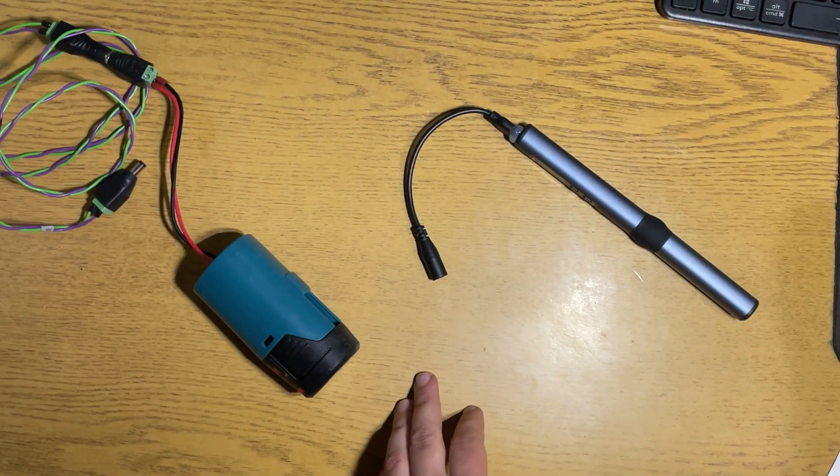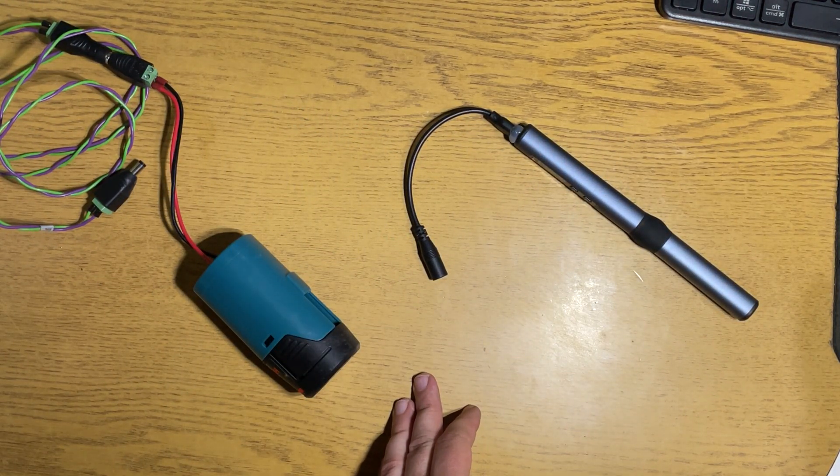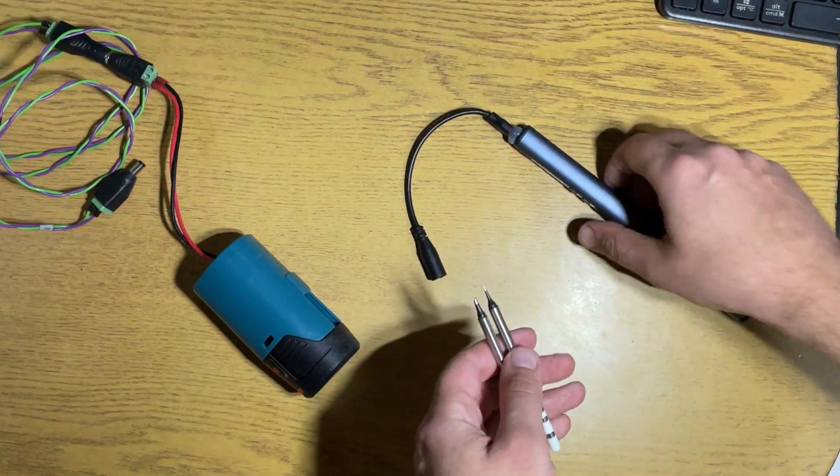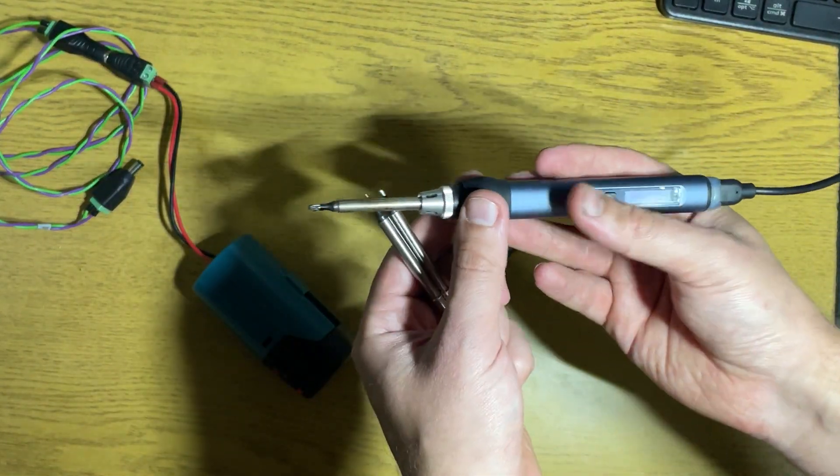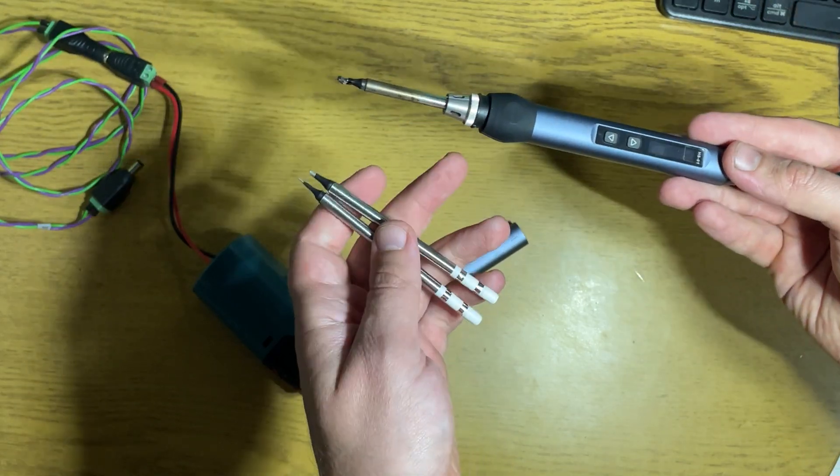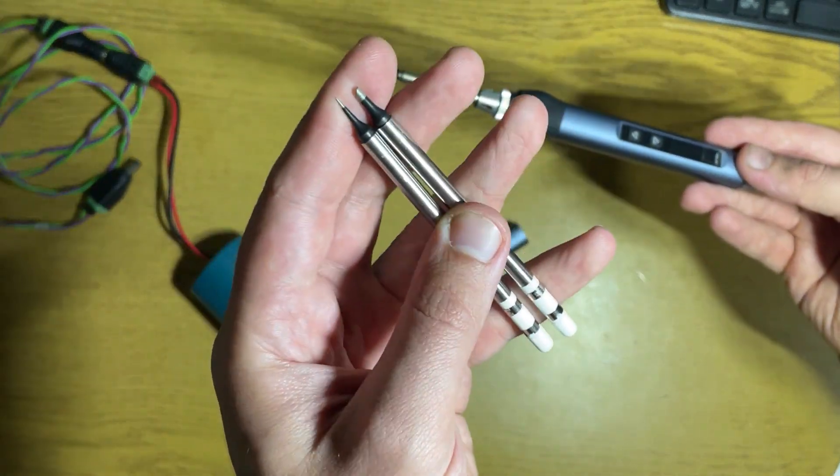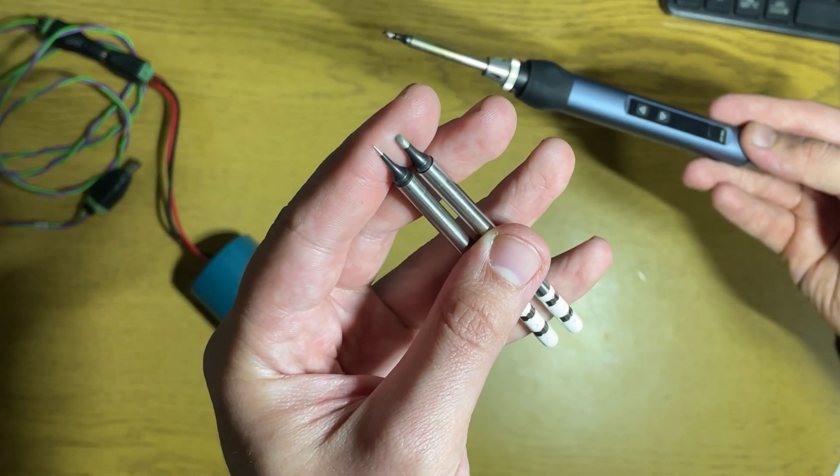The second thing that I want to show you is for tips. On AliExpress, you can buy tips for this FNIRSI soldering iron, and it has only a specific range of tips.